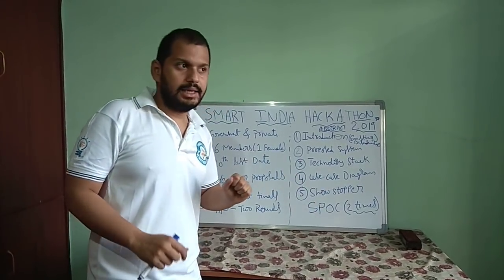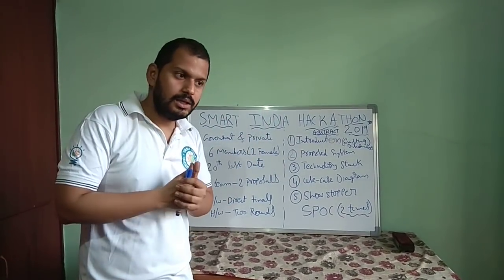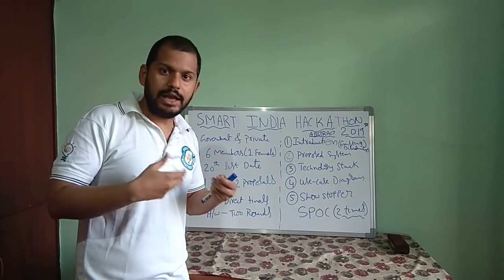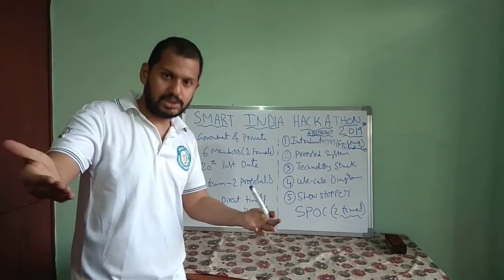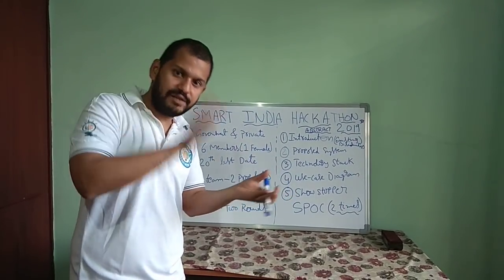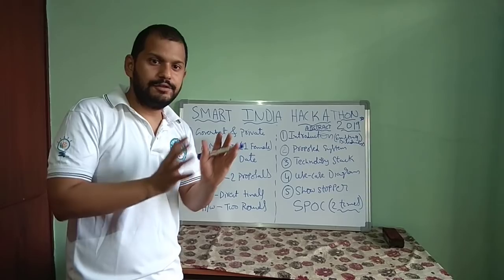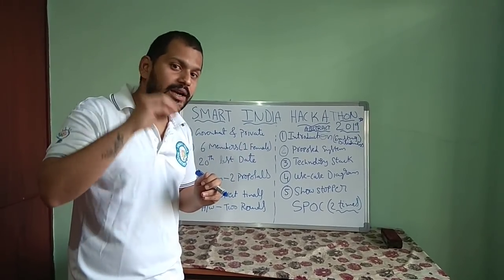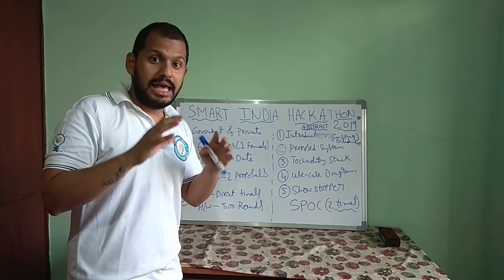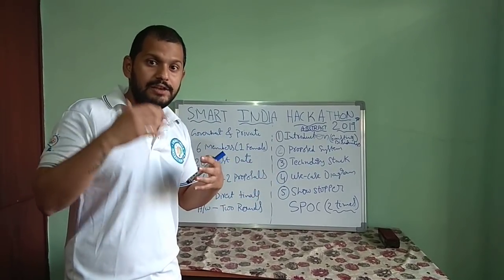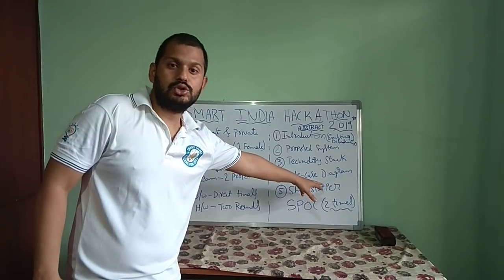Then there is the show stopper. For example, if you are working on a traffic control management system using CCTV cameras, you would not buy your own CCTV cameras or stand in traffic to get images. You would use already available CCTV images and apply artificial intelligence or another method on those images to control traffic lights. But if you are not provided with those CCTV images, it becomes a show stopper for your proposal. If your system depends on certain data and that data is not provided, that is the show stopper — and you must mention it.